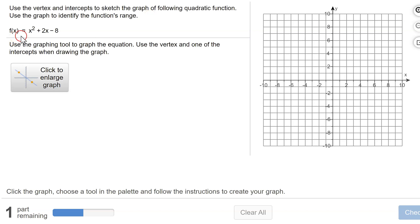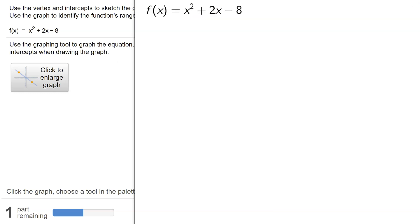Here's our function f(x) = x² + 2x - 8. It says use the graphing tool to graph the equation, but we must use the vertex and one of the intercepts when drawing the graph. So I'm going to have to first find the vertex and one of the intercepts, so let me get some scratch paper out.